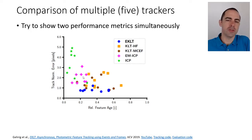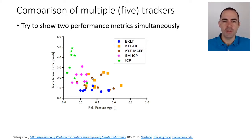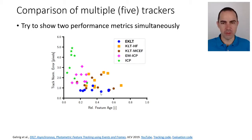Instead of hard data association, using soft data association works much better for point sets. The other three methods work on images and show they perform a bit better than point sets, even though they are more expensive since they process every pixel. There is not much difference between using motion compensated images versus a high-pass filtered reconstructed image with KLT. The last algorithm, eKLT, is the most computationally expensive but achieves the best accuracy — less than a pixel.